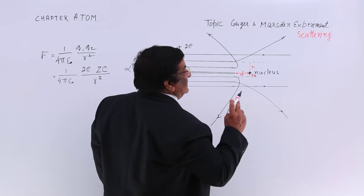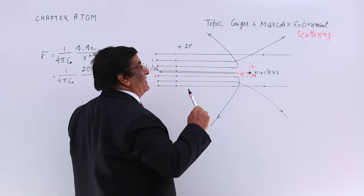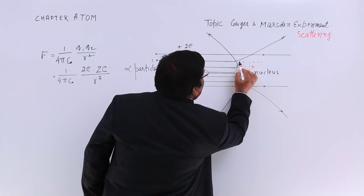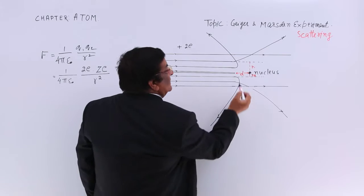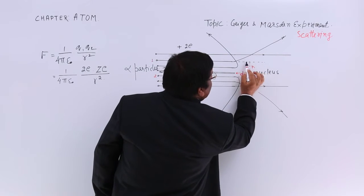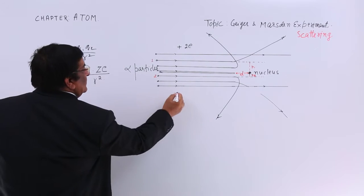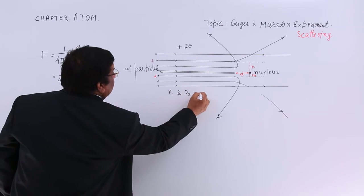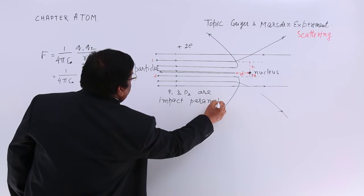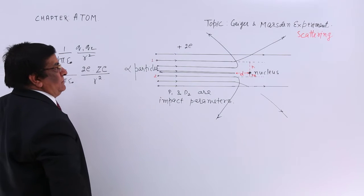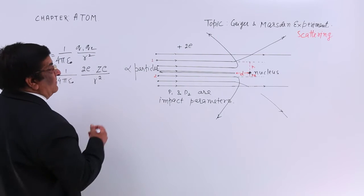Now, there is a term as impact parameter. If it is going here, there is a chance of impact with the nucleus and what is that parameter? The distance between, the distance between, normal distance between path of alpha particle and the nucleus. The normal distance between path of the direction of the alpha particle and the nucleus. This distance is known as impact parameter. P1 and P2 are impact parameters.